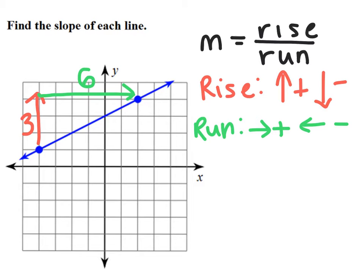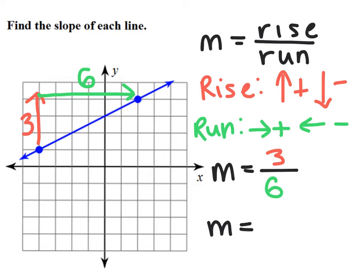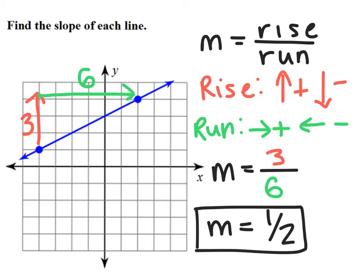Now I'm going to plug it into the slope formula. So the slope equals the rise, which is three, over the run, which is six. And finally, this can be simplified to one-half. So the final answer is the slope is one-half.